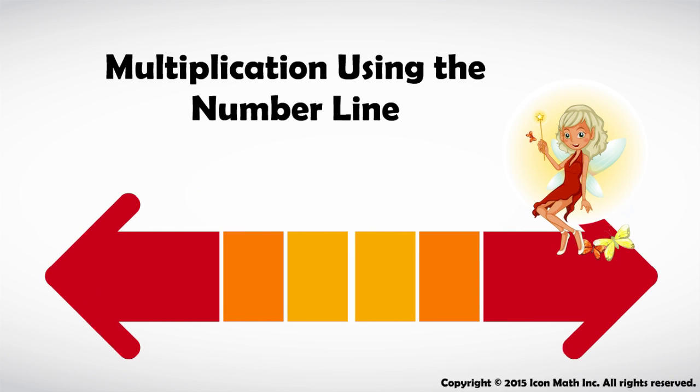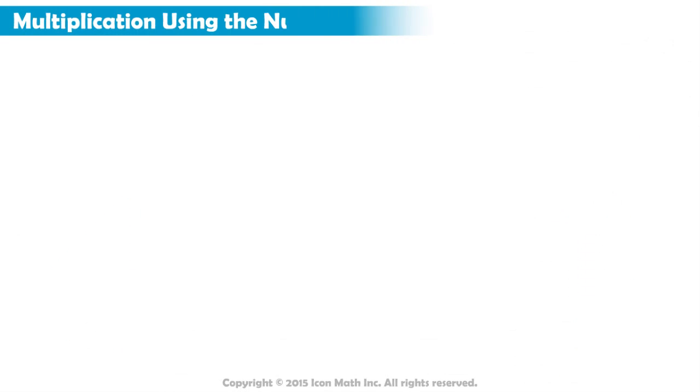Multiplication using the number line. How can we find the product of 4 times 7 using the number line?